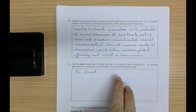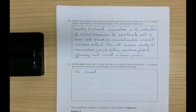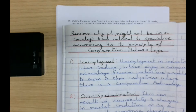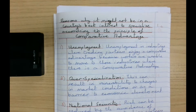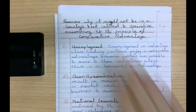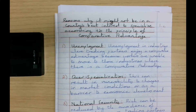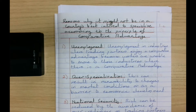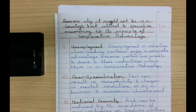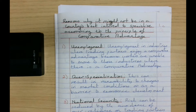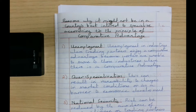Now, outline one reason why it might not be in a country's best interest to specialise according to the principle of comparative advantage. The first reason is unemployment — unemployment occurs in industries where trading partners enjoy comparative advantage because workers are unable to move to the industries where comparative advantage exists.